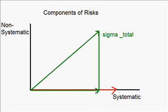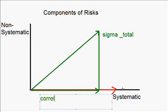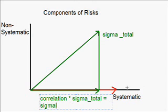So, what is this value? Mathematically, this value is just equal to the correlation between the equity and the market times the total standard deviation of the equity — which is the sigma of the equity's systematic risk.